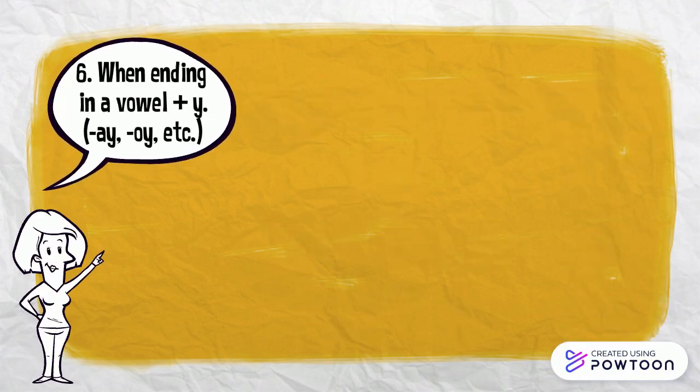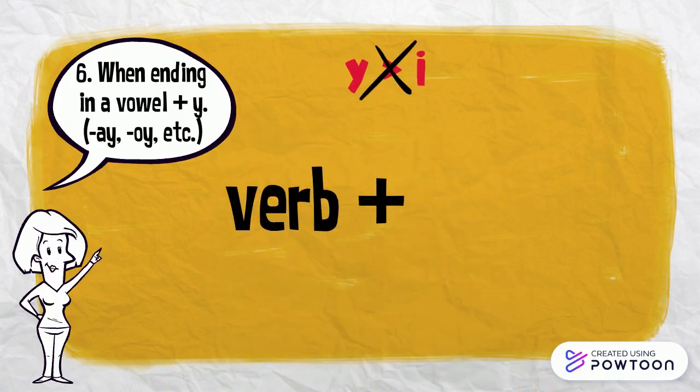When the verb ends in a vowel plus Y, Y does not turn into I. We simply add ED to the end of the verb.